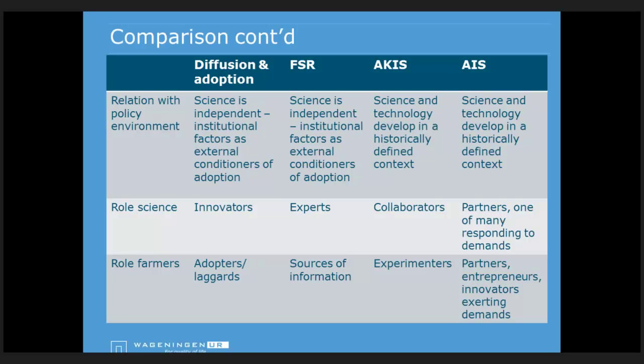The role of science has moved from being the principal innovator, to a collaborator in the AKIS perspective, to one of many partners in AIS. A key difference between AKIS and AIS is that AKIS also had a systems perspective, but mainly focused on farmers, research, and extension - R&D plus farmers interacting. In AIS, everybody in the value chain and the policy environment needs to interact for innovation.